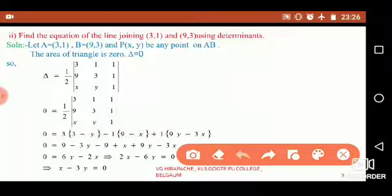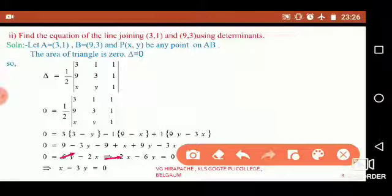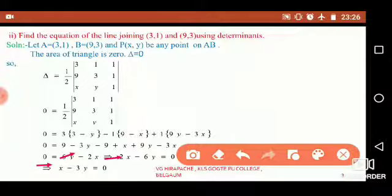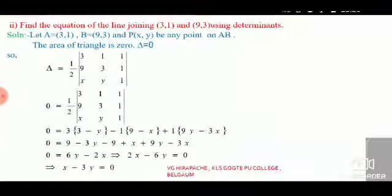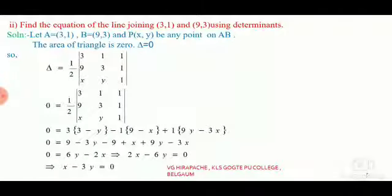Combining like terms, we get 6y minus 2x equals 0, which implies 2x minus 6y equals 0. Taking 2 as a common factor, we are left with x minus 3y equals 0, which is the required equation of the line joining the two given points.